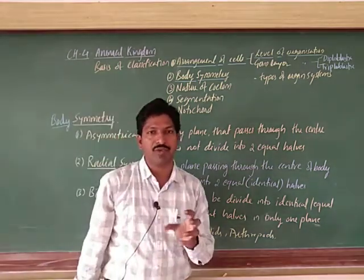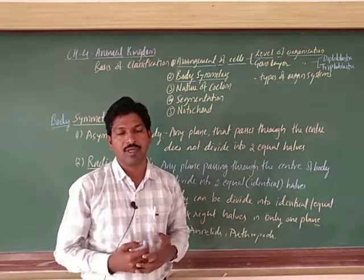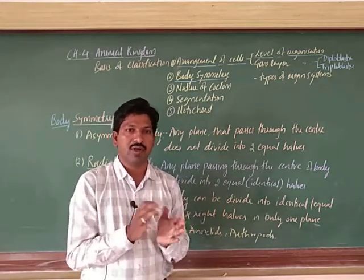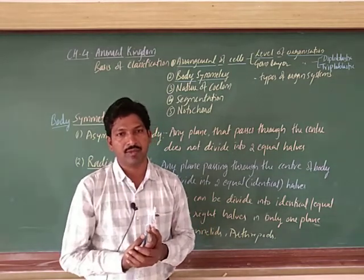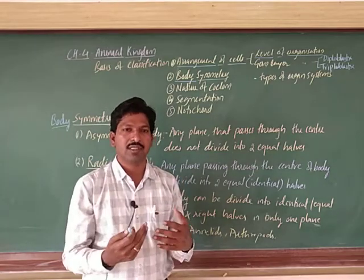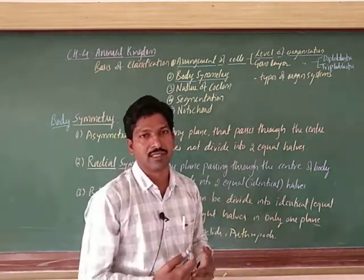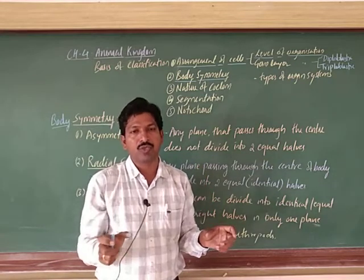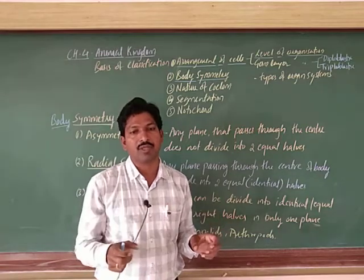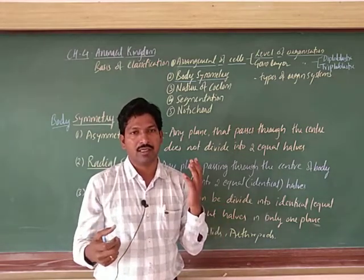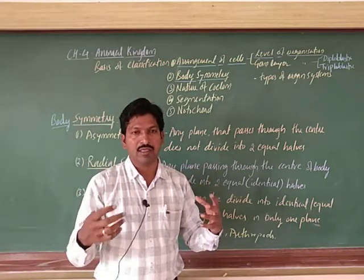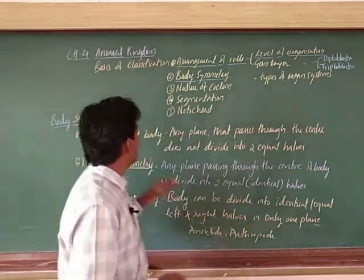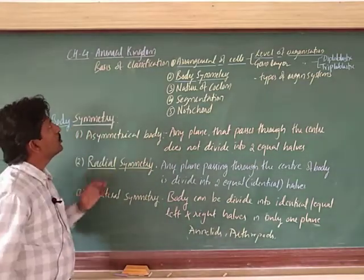Body shows some unique features. When we observe ourselves in a mirror, the right and left sides appear similar. When you take a section at the centre - through an imaginary central axis - you can observe that the right and left parts appear to be equal. The right eye and left eye are similar, and we can observe two equal halves. That is what we call bilateral symmetry. Body symmetry is also one of the criteria to classify animals.